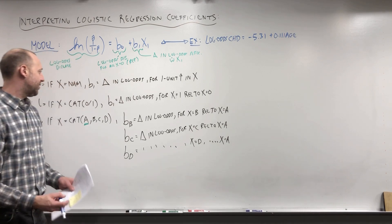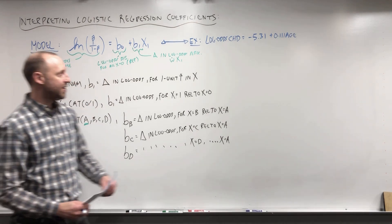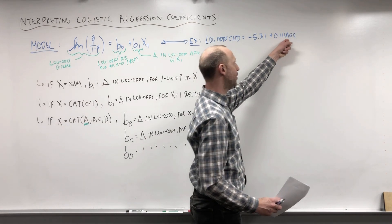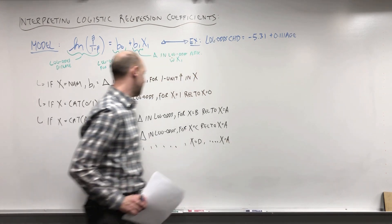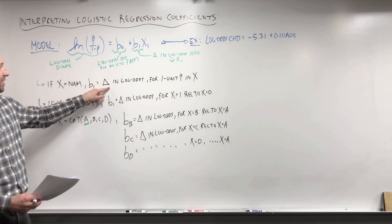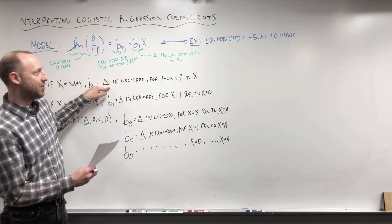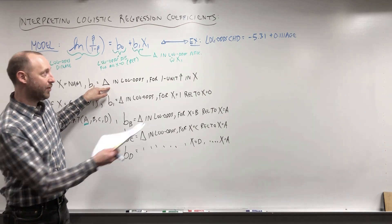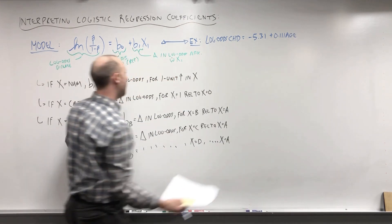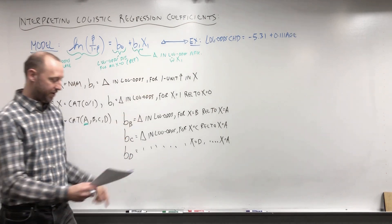Those are the generic interpretations. In our example, we're looking at a numeric x, so that coefficient of 0.111 tells us the log odds increase by 0.111 every time age goes up by one year.